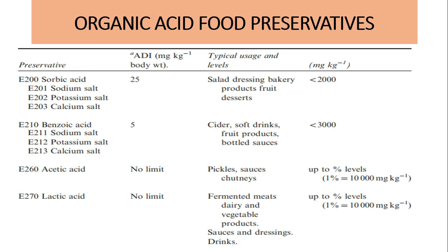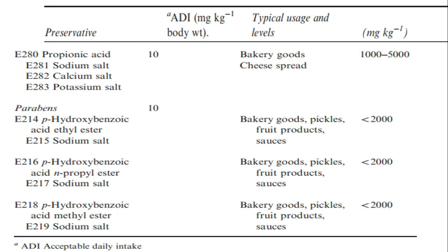Lactic acid is coded E270 with no set limit. It is used in fermented meats, dairy and vegetable products, sauces, dressings, and drinks at up to 1%. Propionic acid is E280; its salts are sodium propionate (E281), calcium propionate (E282), and potassium propionate (E283). Used in bakery goods and cheese spread up to 1500 mg per kg.